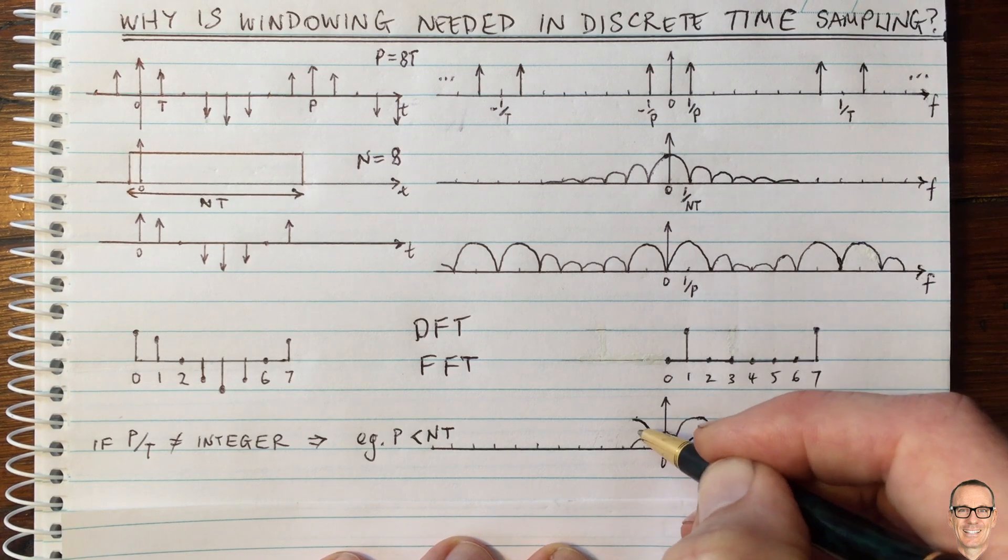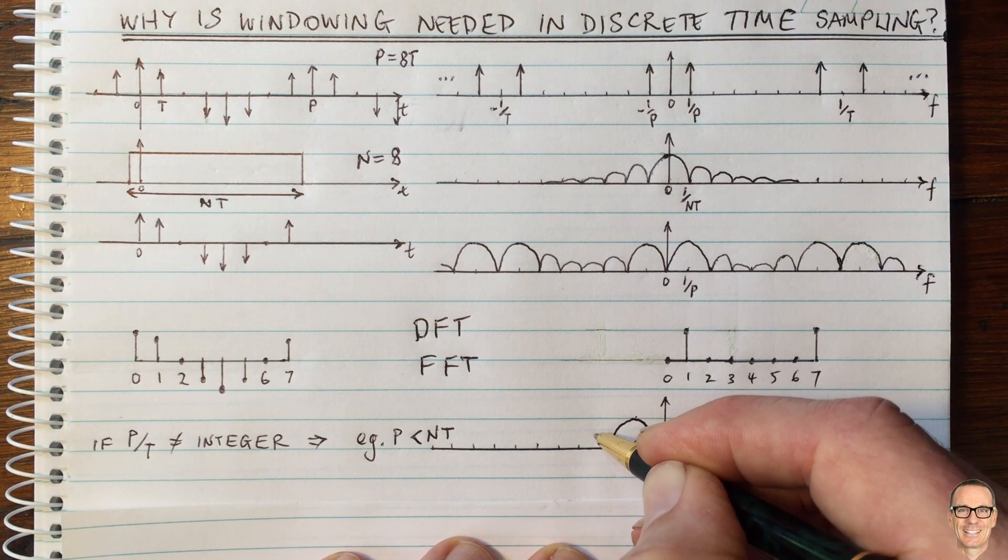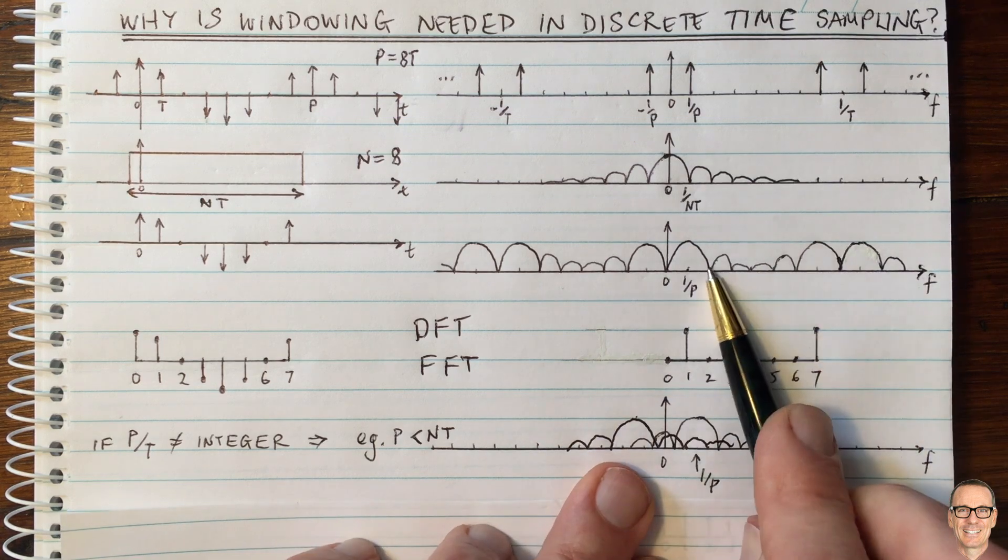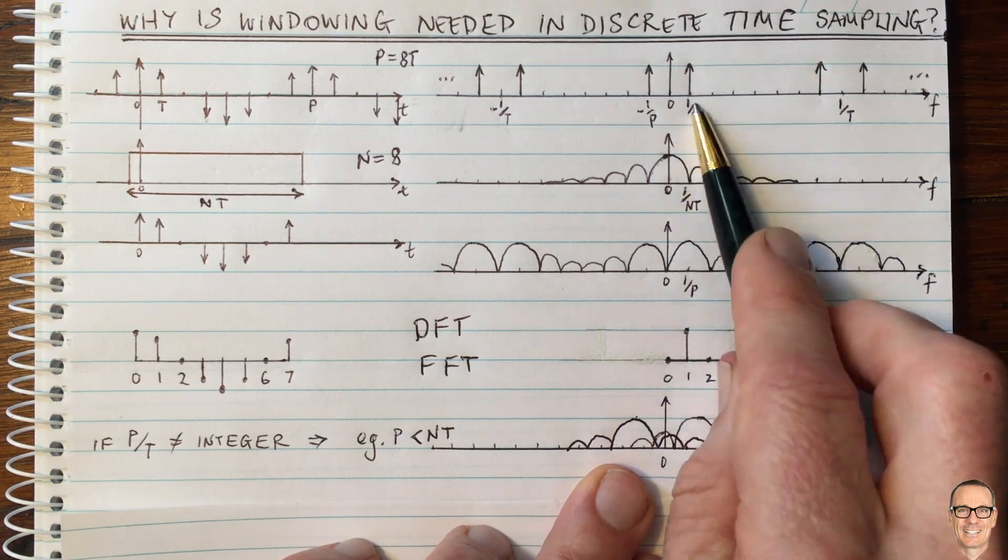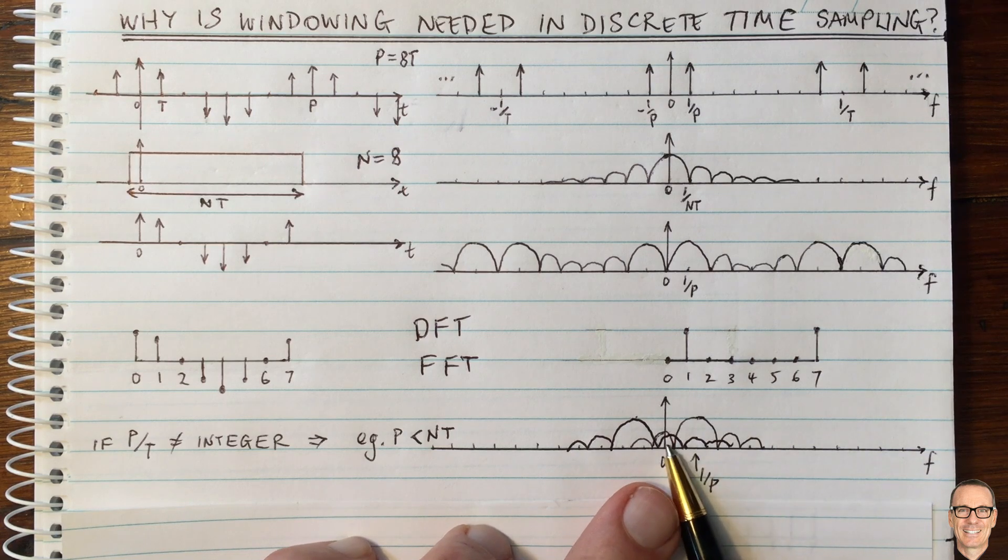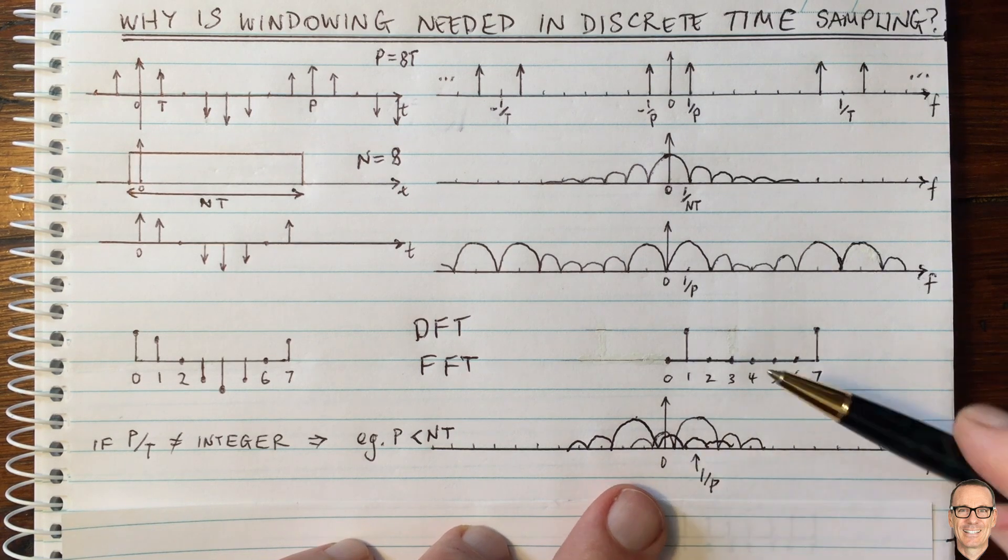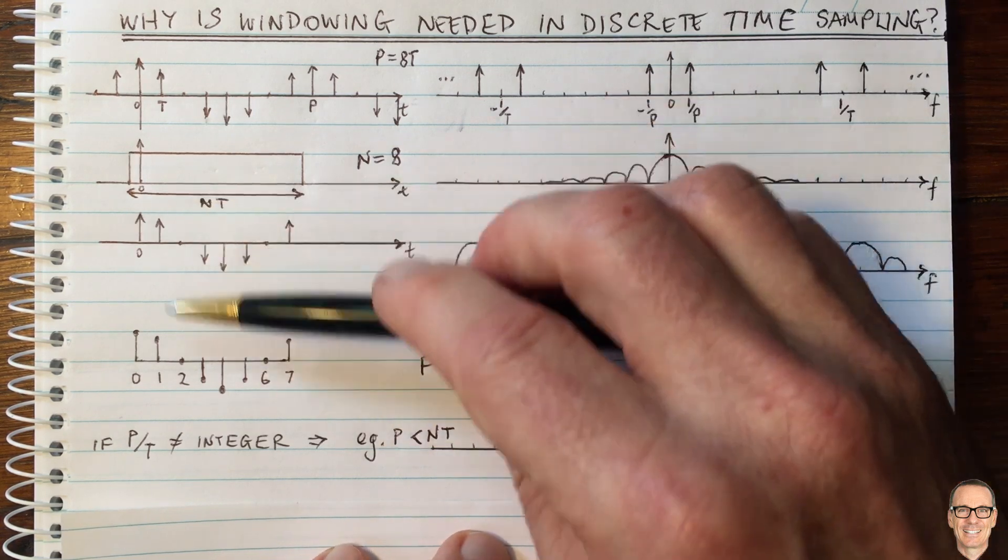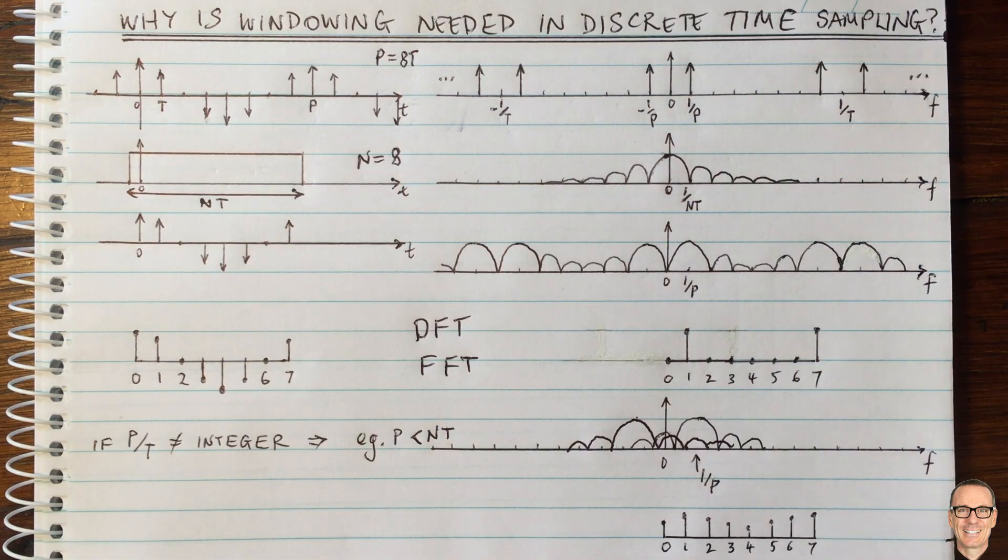our signals where they all match up with zeros at the one on P multiples. Now they're overlapping. We don't have those zeros anymore.